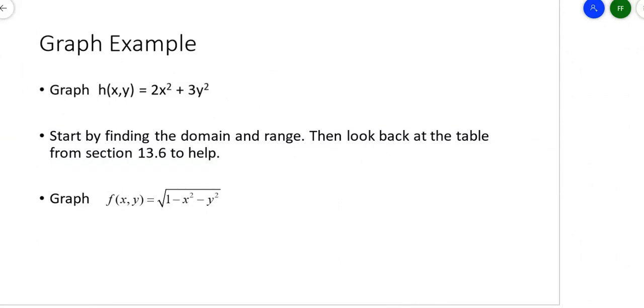Let's take a look at graphs. Suppose you wanted to graph 2x squared plus 3y squared. First you need to know the domain. The domain is all real numbers for both x and y. The range is z values greater than or equal to zero. You can start looking at that table from section 13.6. This turns out to be an elliptic paraboloid. There's your z-axis, y-axis goes this way, x-axis that way. It sits like a bowl here, entirely above the z-axis. It does not dip below the xy plane because all z values are greater than zero.